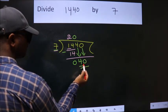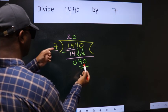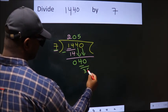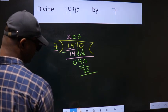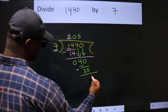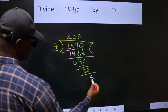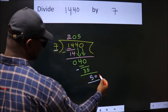So 40. A number close to 40 in the 7 table is 7 times 5, which is 35. Now we subtract. We get 5. No more numbers to bring down, so we stop here. This is our remainder. This is our quotient.